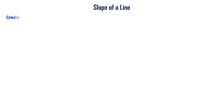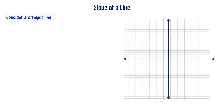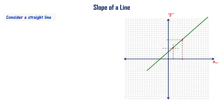Let us now learn about slope of a line. Consider a straight line on a coordinate system x, y. This is an x, y coordinate system. Let me draw a straight line on this. Let me mark a point. So for that I have x coordinate and y coordinate marked. Let me mark another point for which x and y coordinates are given. Now you look at this.